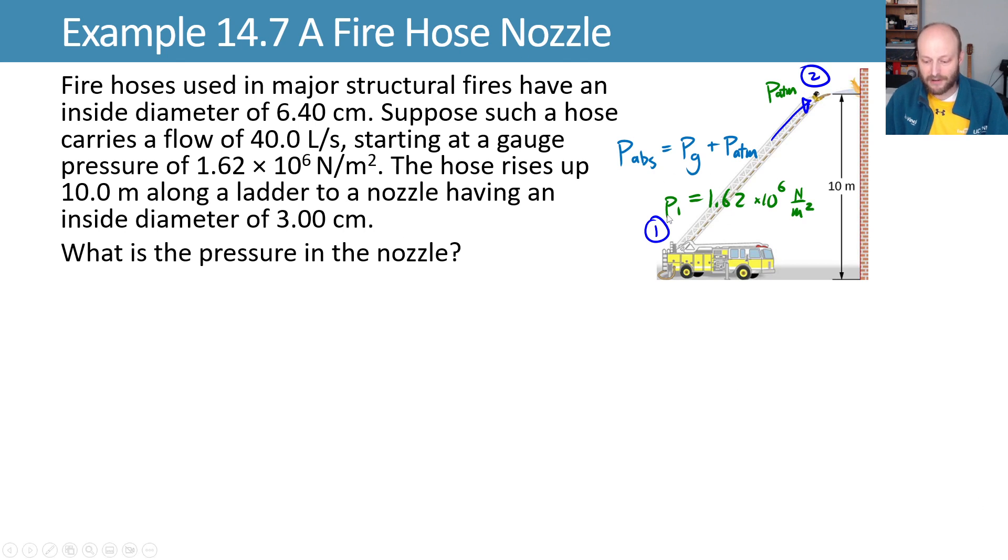So we have our high pressure down here from our fire hose and our lower pressure, or atmospheric pressure, at the point where it's coming out the nozzle of the hose. We can now write Bernoulli's equation. Full thing, it's long. And now we try and simplify it.